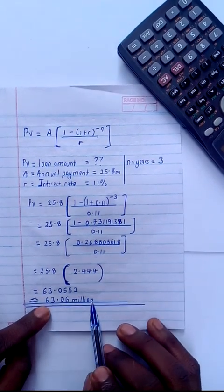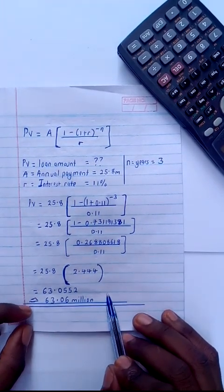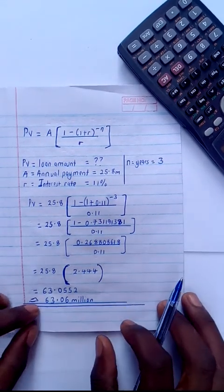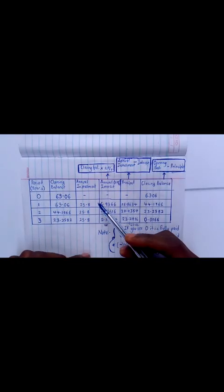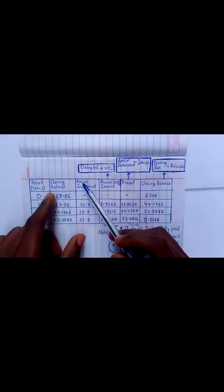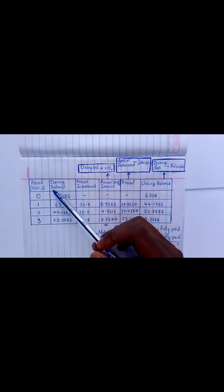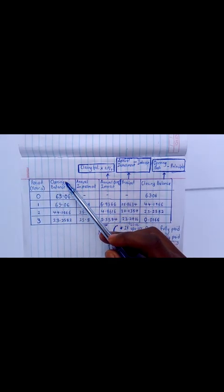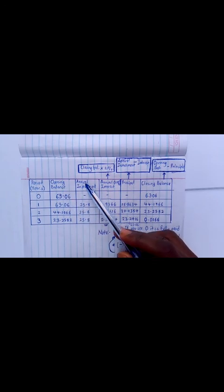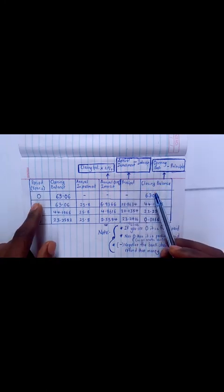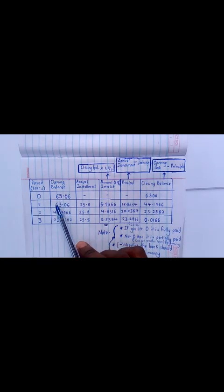This is the full format of the loan amortization schedule, having columns for the period, opening balance, annual installment, annual interest which is 11 percent, principal, and closing balance. I have my zero year where I acquired the loan which had an opening balance of 63.06 and a closing balance of 63.06.